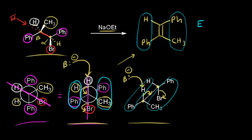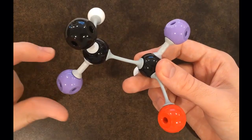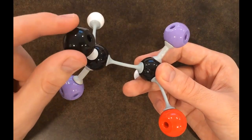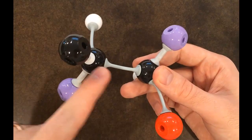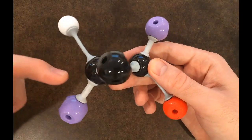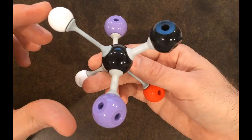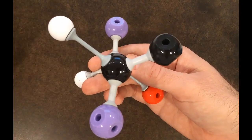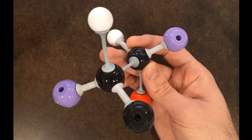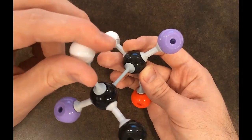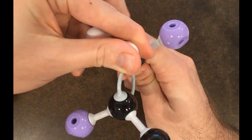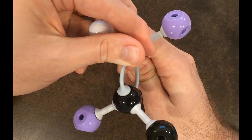Looking at a 3D model of the alkyl halide, the purple groups are the phenyl groups, the red is the bromine, and at the beta carbon we have a methyl group coming out in space and a hydrogen going away. Staring down the beta-alpha bond in the Newman projection, the beta hydrogen is already antiperiplanar with the bromine. Turning to the sawhorse projection view, when we remove the beta proton and the bromine, you can see the double bond that forms — with the two phenyl groups on opposite sides. That's our E-alkene product.